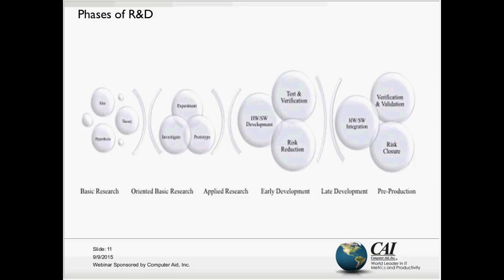The earlier in the development phase an activity is, the less is really known about how to accomplish the change that is desired, and the later in the development phase, the closer it is to implementation readiness. This is the representation of that progression, and although there's a linearity shown in the figure, the progression of R&D is really not linear. For example, an activity may start in applied research and move into early development, or a basic research activity may begin and end within that category without ever moving into the next. It's also possible to start in basic research, move all the way into late development, and then loop back into an earlier phase if an experiment or prototype does not perform as planned. There's a relative synergistic relationship where results drive the progression.